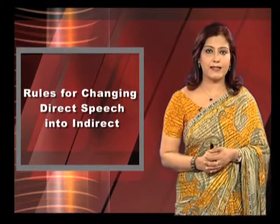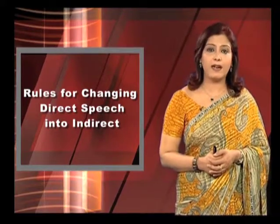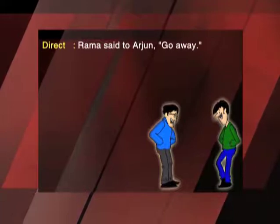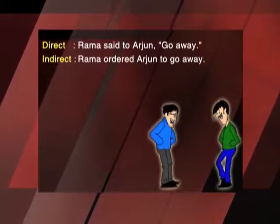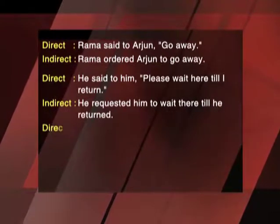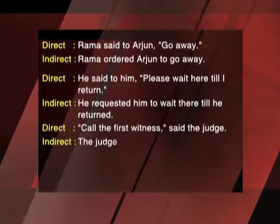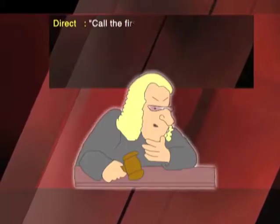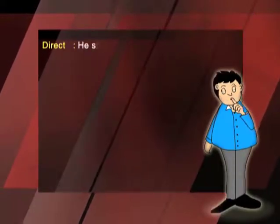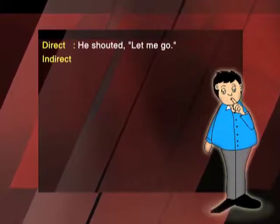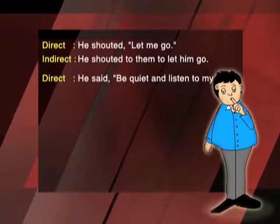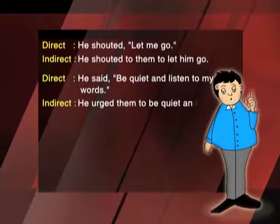In reporting commands and requests, the indirect speech is introduced by some verb expressing command or request, and the imperative mood is changed into the infinitive. Direct: Rama said to Arjun, 'Go away.' Indirect: Rama ordered Arjun to go away. Direct: He said to him, 'Please wait here till I return.' Indirect: He requested him to wait there till he returned. Direct: 'Call the first witness,' said the judge. Indirect: The judge commanded them to call the first witness. Direct: He shouted, 'Let me go.' Indirect: He shouted to them to let him go. Direct: He said, 'Be quiet and listen to my words.' Indirect: He urged them to be quiet and listen to his words.